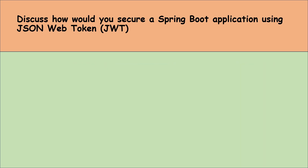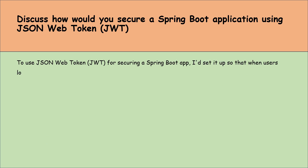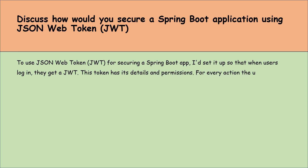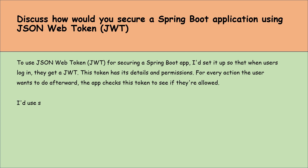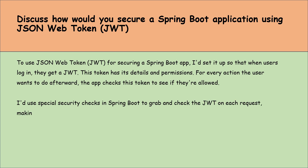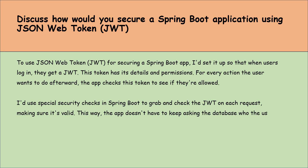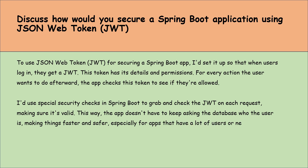How would you secure a Spring Boot application using JSON Web Tokens? I would set it up so that when users log in, they get a JWT. This token holds their details and permissions. For every action the users want to do afterward, the app checks this token to see if they are allowed. I would use a special security filter in Spring Boot to grab and validate the JWT on each request, making sure it's valid. This way the app doesn't have to keep querying the database to identify the user, making things faster and safer, especially for apps that have a lot of users or need to be very secure.